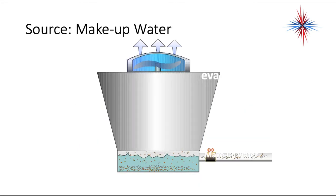Another source of contaminants is the make-up water. With cooling towers, we need to regularly make up the water that evaporates off because we deal with evaporative cooling. The make-up water brings a lot of contaminants into the system. Down at the bottom you'll see those as sediments — the minerals that are part of the make-up water will not evaporate out and will become part of the entire system.